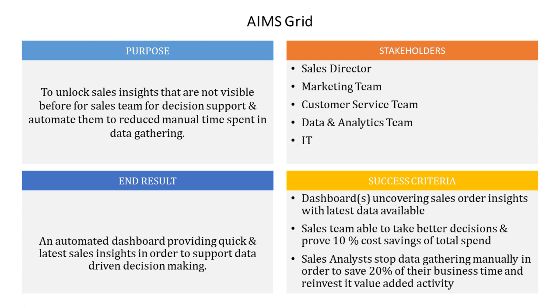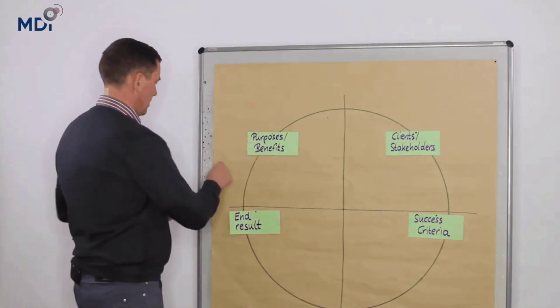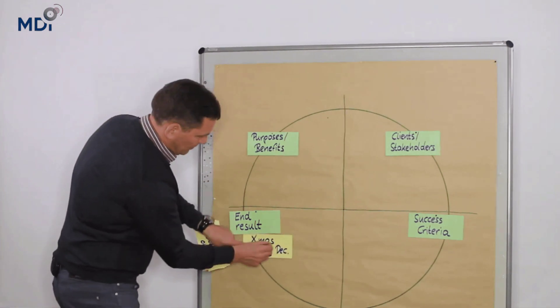After the team finishes brainstorming and once they have defined all four components of AIMS Grid, they will initiate the project. For AIMS Grid, there is a link to a nice YouTube video in the description below with more detail. If you're targeting a career as a data analyst, technical skills are not the only thing that matters — soft skills are very important. If you know about AIMS Grid and can answer questions about it during an interview, that puts a positive impression on the interviewer.